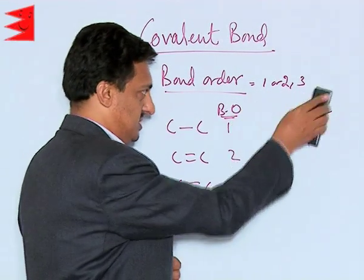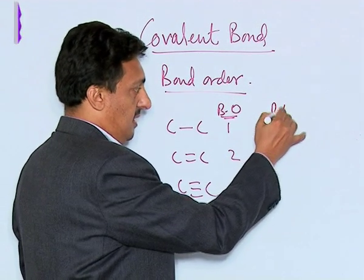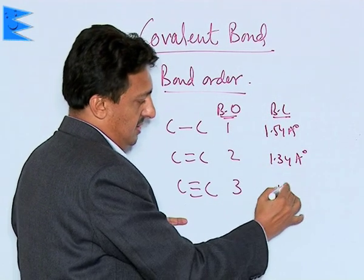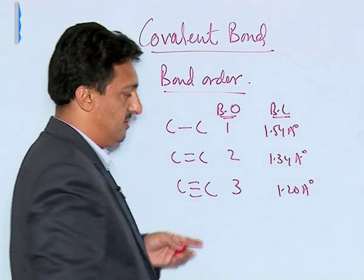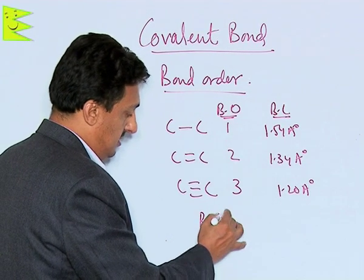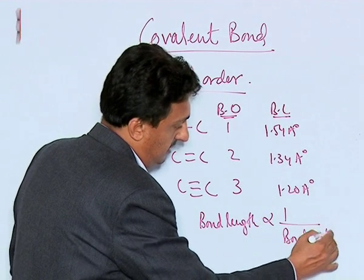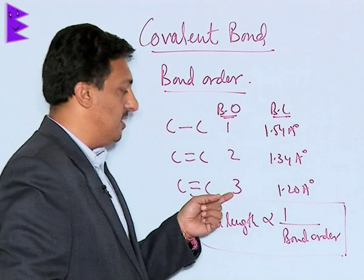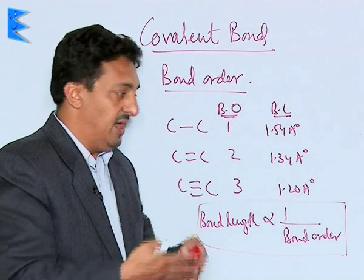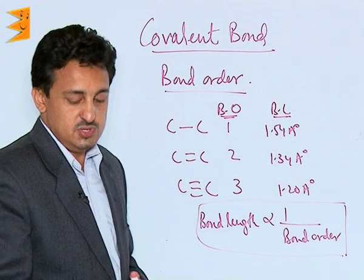Taking the example of carbon-carbon bonds, their bond lengths are 1.54 Angstroms, 1.34 Angstroms, and 1.20 Angstroms for single, double, and triple bonds respectively. What we notice is that bond length is inversely proportional to bond order. Higher the bond order, shorter the bond length — more bonds between two atoms means they come closer, so the bond length is smaller.